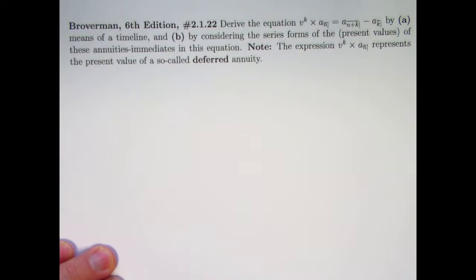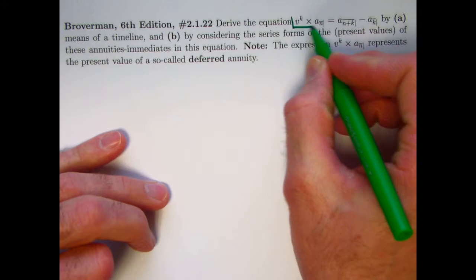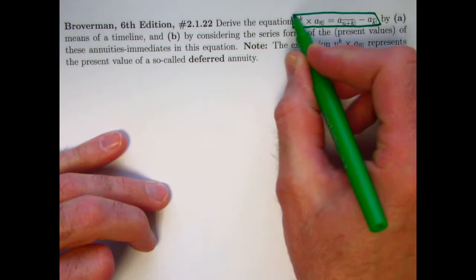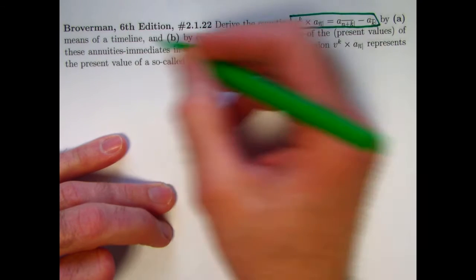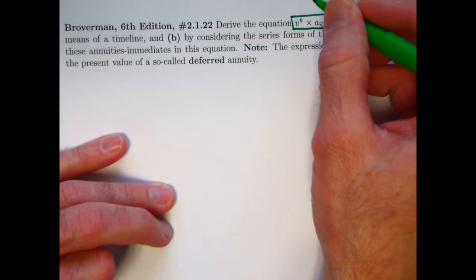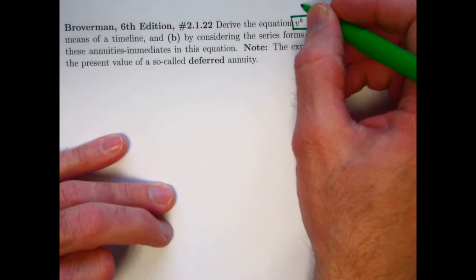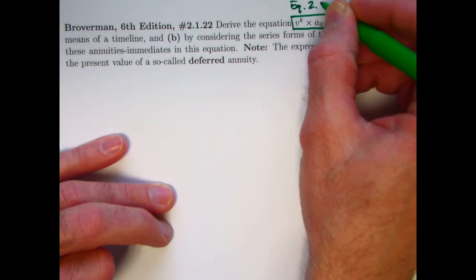Here's the problem statement. Derive this equation that you see right here in two ways. This equation is from the sixth edition of Broverman's book on the mathematics of investment and credit. It's equation 2.8 on page 97 in that book.